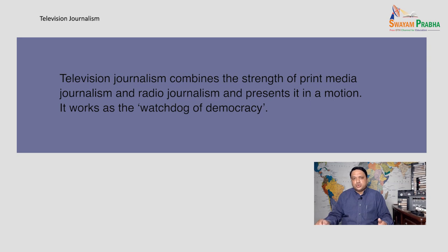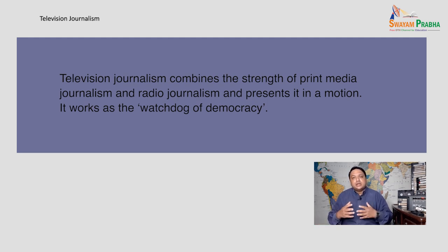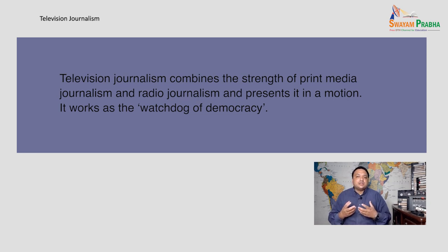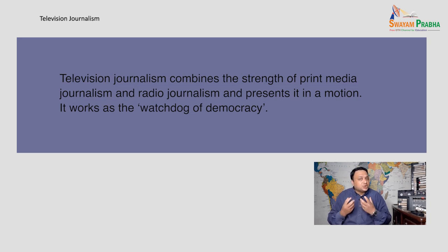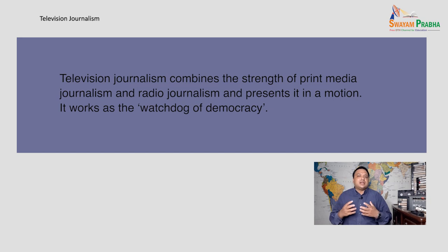Television journalism also relies on news sources and editorial control is exercised. It performs the vital social role of keeping the public informed about events, creating a culture of public consciousness about broader social issues — political issues, educational issues, environmental issues — informing about everything happening in our society. Like print media, it also works as a watchdog of democracy.